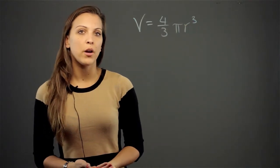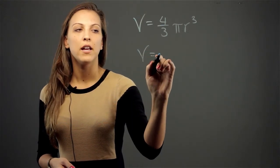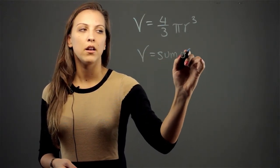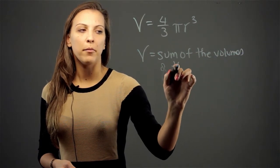For the volume of a polyhedron, the formulas vary because it depends on the polyhedron. The way you find it is by doing the sum of the volumes of the pyramids.